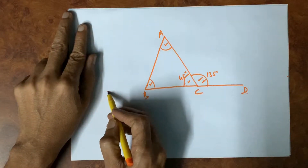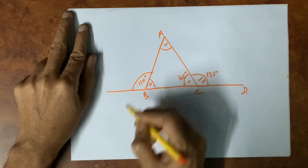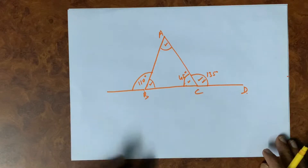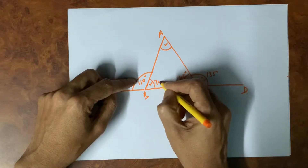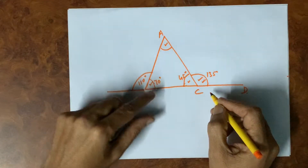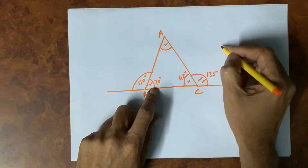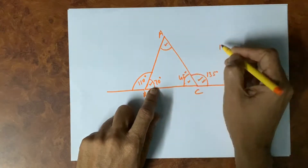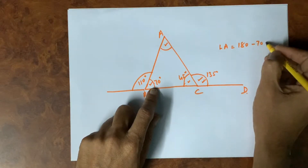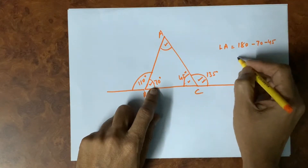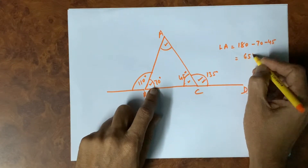It is also given that this exterior angle is 110 degrees. These are two supplementary angles, so the interior angle here will be 70 degrees. These three are angles of the triangle, so angle A equals 180 minus 70 minus 45, which equals 110 minus 45, which equals 65 degrees.